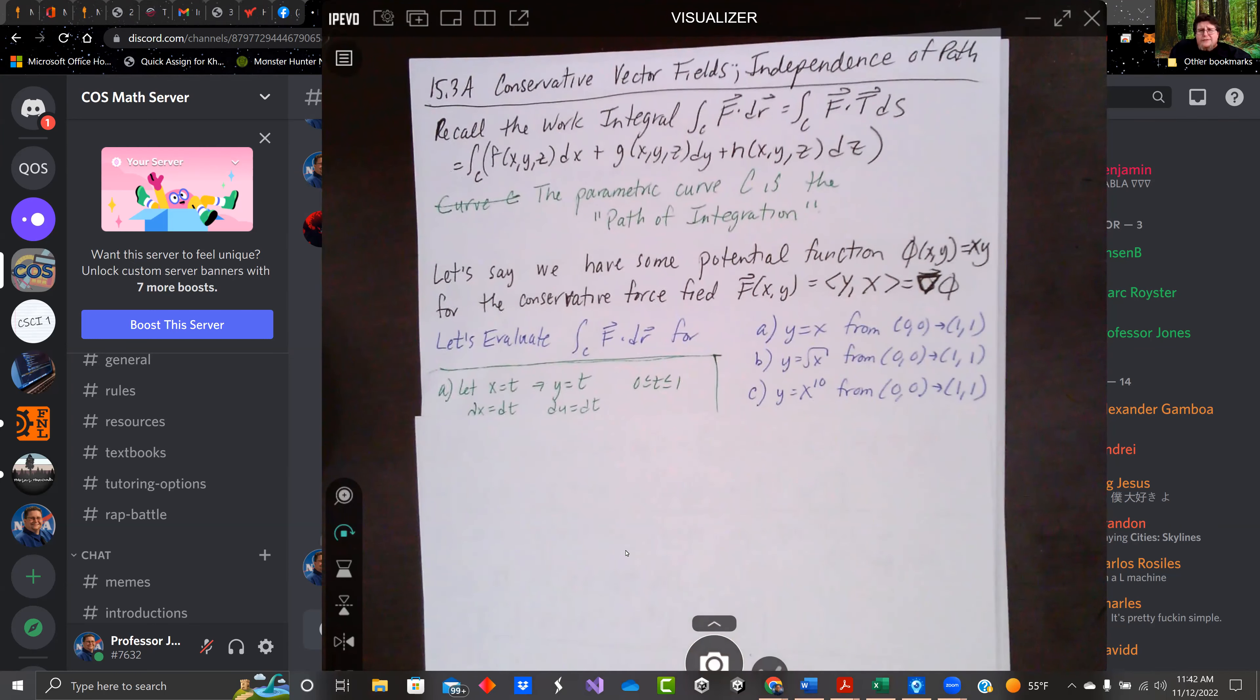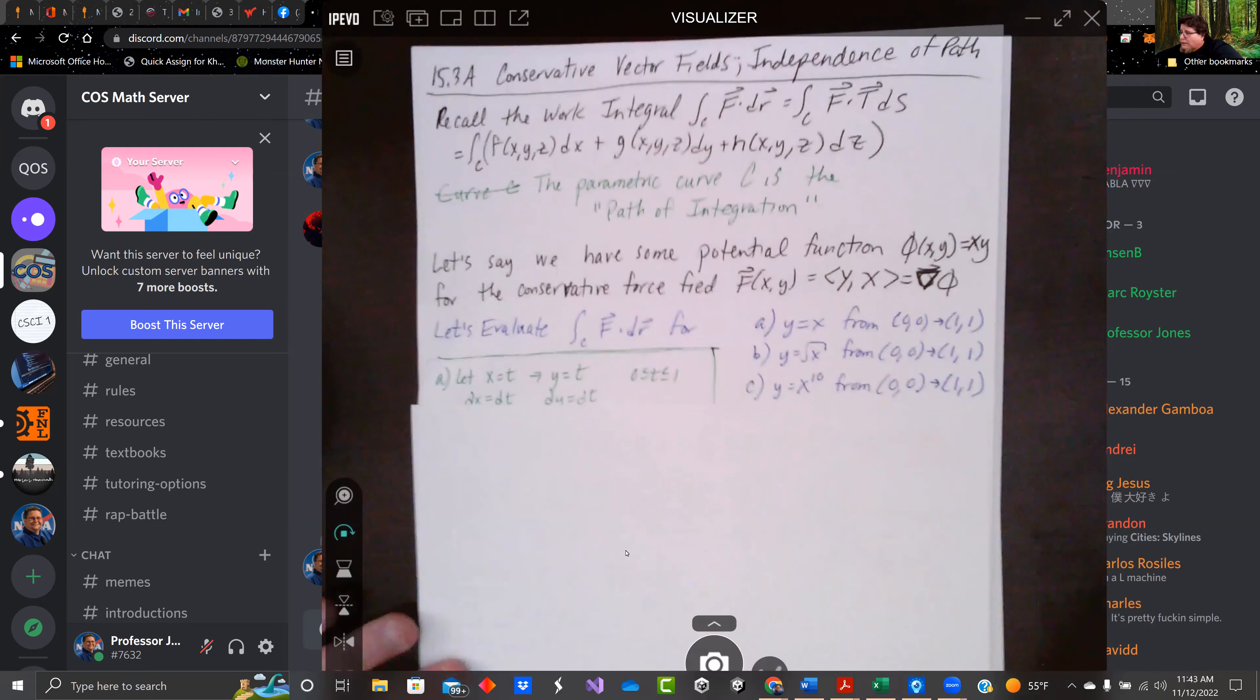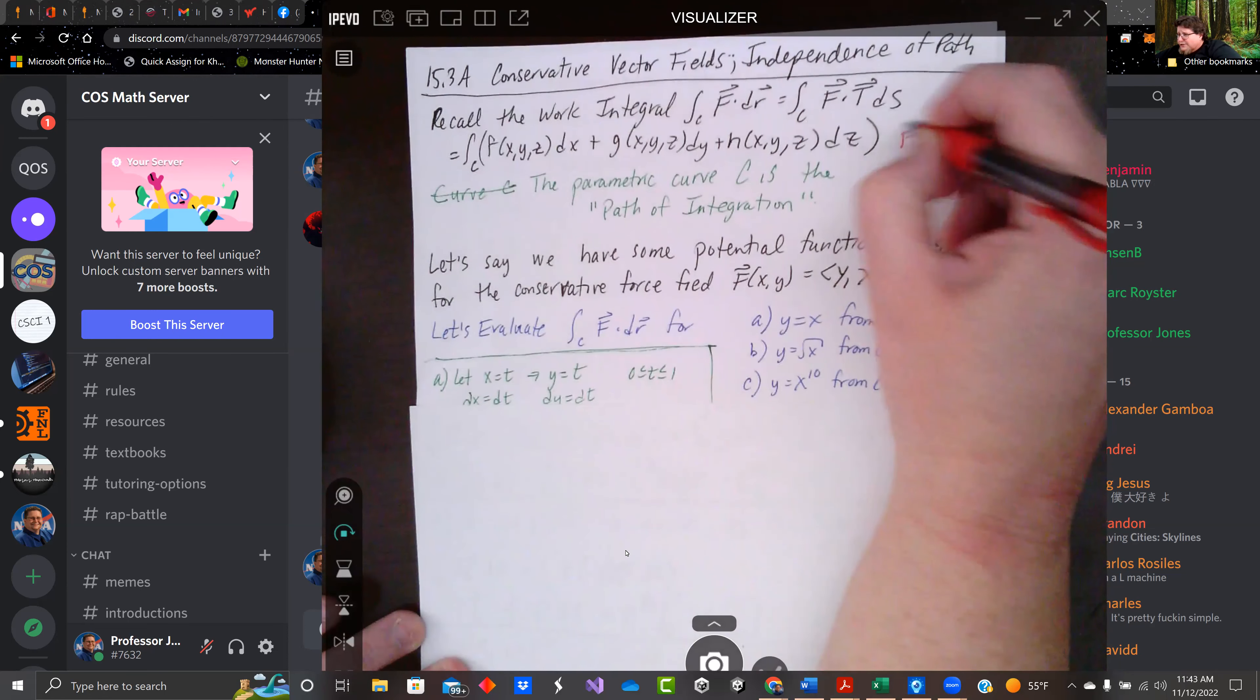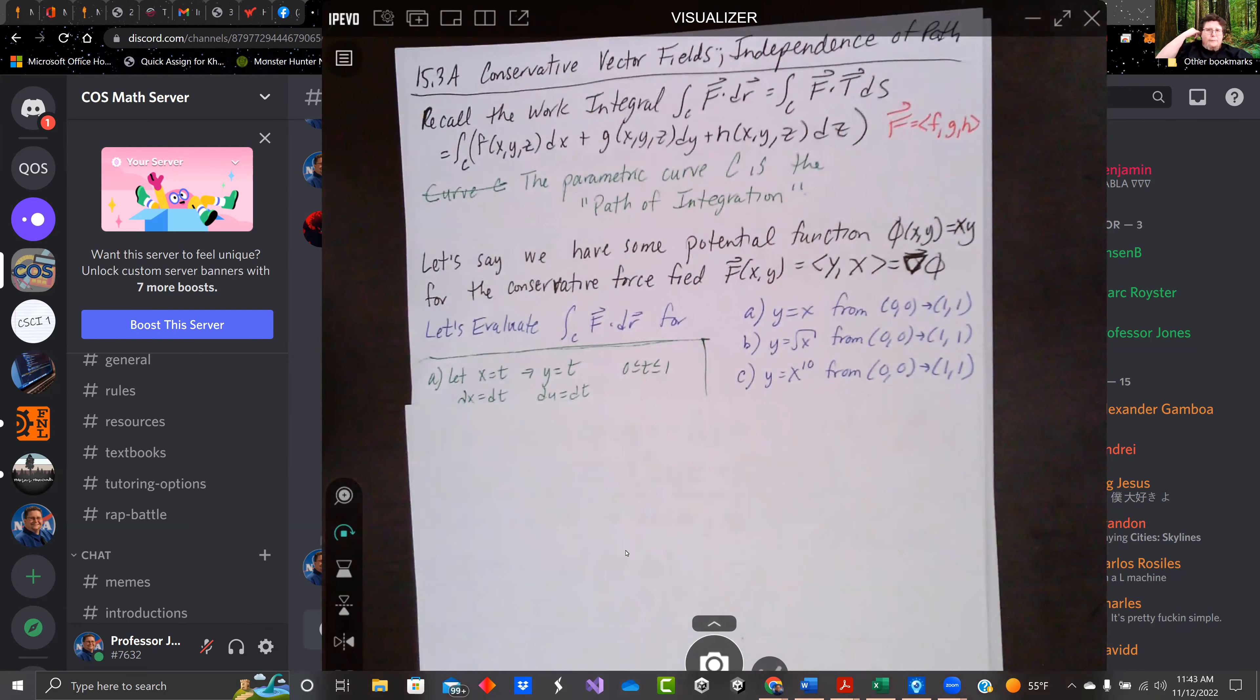Recall that the work integral that we've done in the past along a curve is f dot dr. We did this in 15.2, and that translated to f times the tangential vector ds, and we saw that that was the integral along the line with f dx plus g dy plus h dz, where our force vector field was f, g, and h. And this was the parametric curve c. That's the path of integration we're taking. So work we did in a straight line in the past. Now we're doing it along a curve.